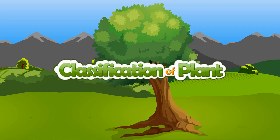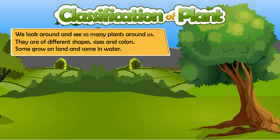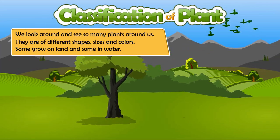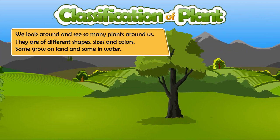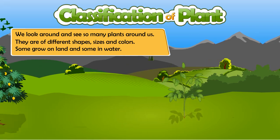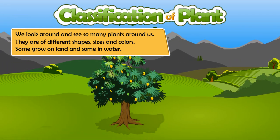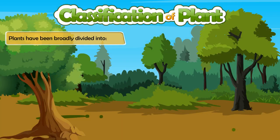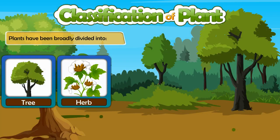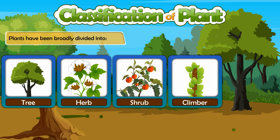Classification of Plants. We look around and see so many plants around us. They are of different shapes, sizes and colors. Some grow on land and some in water. Plants have been broadly divided into Tree, Herb, Shrub, Climber, and Creeper.